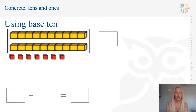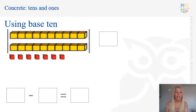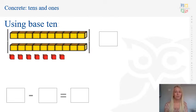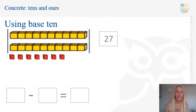Now, today we're going to be focusing on subtracting two-digit numbers. To start off, we're going to be using some base 10. The first job I need to do is count how many I've got altogether as the starting number. Can you pause the video and count in groups of 10s and 1s to see what number I'm starting with? Let's count — 10, 20, 21, 22, 23, 24, 25, 26, 27. So I can put that into my number sentence — I am starting with 27.